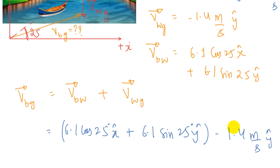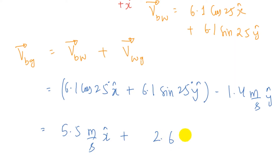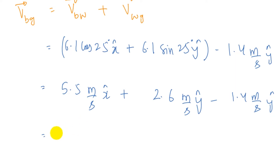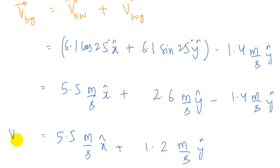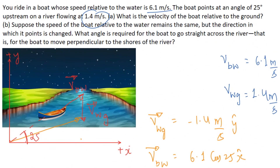Plugging in the values: 6.1 cosine 25 degrees gives 5.5 meters per second in the x-hat direction, and 6.1 sine 25 degrees gives 2.6 meters per second in the y-hat direction, minus 1.4 meters per second y-hat for the water. Adding the y components: 2.6 minus 1.4 gives 1.2 meters per second. So the velocity of boat relative to ground is 5.5 x-hat plus 1.2 y-hat meters per second. This is the answer for part A.